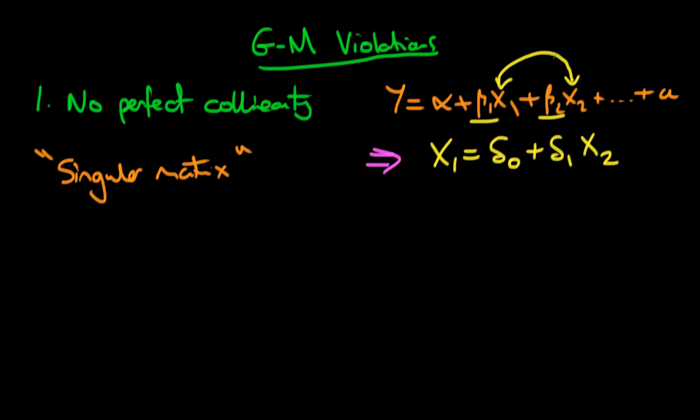because the idea here is that in the matrix form of econometrics you can form a matrix of your independent variables and in order to get the individual estimates of beta1, beta2 all the way through to betap exactly or to get a unique value of those parameters the matrix itself has to be invertible. In other words it has to be non-singular.